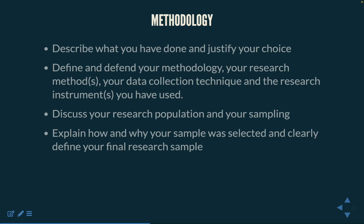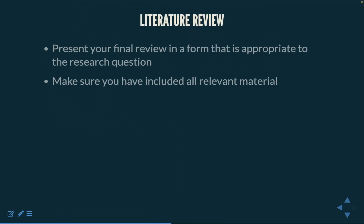Discuss your research population and your sampling. Explain how and why your sample was selected, and clearly define your final research sample. Remember that you may have started your work on the literature review very early in the process, before the research proposal was written. Make sure to finalize your review in a form that is appropriate to the research question, and carry out a final scan of the literature to ensure you have included all relevant material.